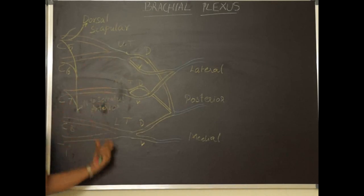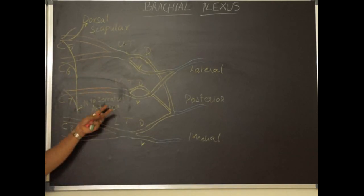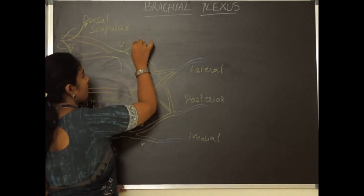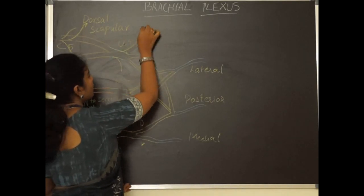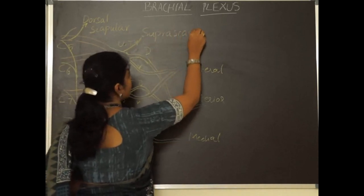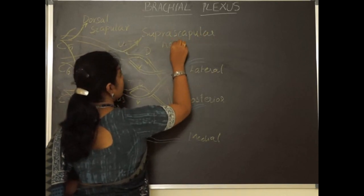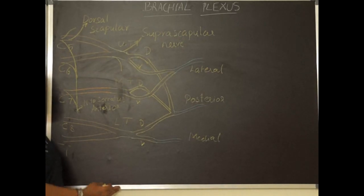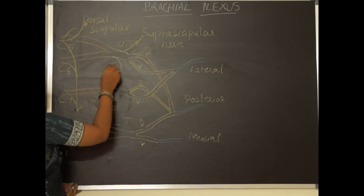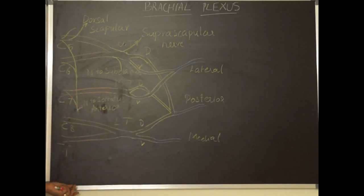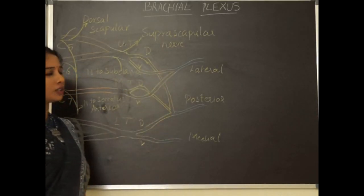Now let's see the branches of the trunks. The upper trunk alone gives branches — no other trunks give rise to branches. The upper trunk has two branches. One branch is the nerve to subclavius. Subclavius is a small muscle present below the clavicle.